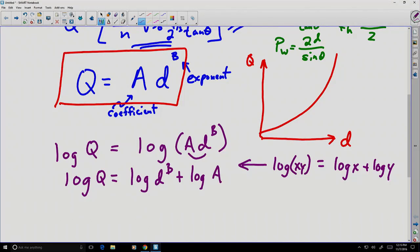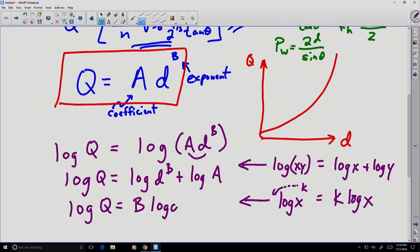And another logarithmic rule that we can take advantage of is recognizing that the logarithm of x to the power of k is the same as k times the logarithm of x. In other words, you can move the exponent down in front of the logarithm. It's the same as multiplying. And if we do that process, we can now rewrite this equation again. The logarithm of Q is equal to b logarithm of d plus logarithm of A.